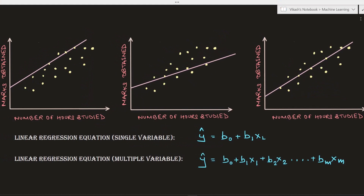We have the same problem plotted three times. In the first attempt, we started with a random b0 and b1 value — the origin from where we start the straight line and the value of the slope. You can see that with respect to this straight line, the loss is too much and the difference from all other data points is too large.